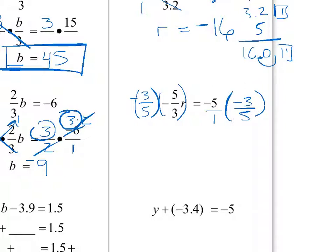On the left-hand side, the 5's cancel with the 5's and the 3's cancel with the 3's — it's a good date. 1 times 1 times r is just r. On the right-hand side, a 5 cancels with a negative 5, also a good date. We're left with negative 3 times a negative, which is positive 3. This is where it gets really tricky — it has nothing to do with understanding inverse operations and everything to do with paying attention to your sign rules.